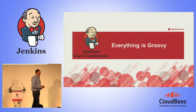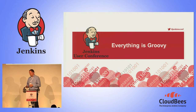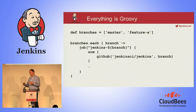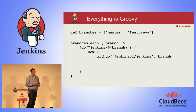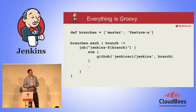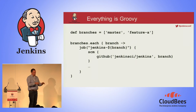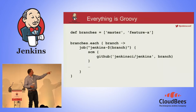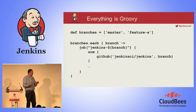Because it's Groovy — a JVM language — everything you can do in Groovy you can do in the Job DSL scripts. You can define variables like a branches variable which is a list of two elements: master and feature-A. Then you can loop over that list and create a new job for each element using Groovy GString templates to insert the loop variable into the string. So there will be a job called Jenkins-master and Jenkins-feature-A created, and each will have GitHub source code management set up with the current branch, either master or feature-A.